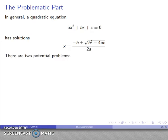Now notice that in this particular equation, this formula, there's two potential problem areas. First of all, because it's a quotient, we're dividing by 2a, we have to make sure that 2a can't be equal to 0.